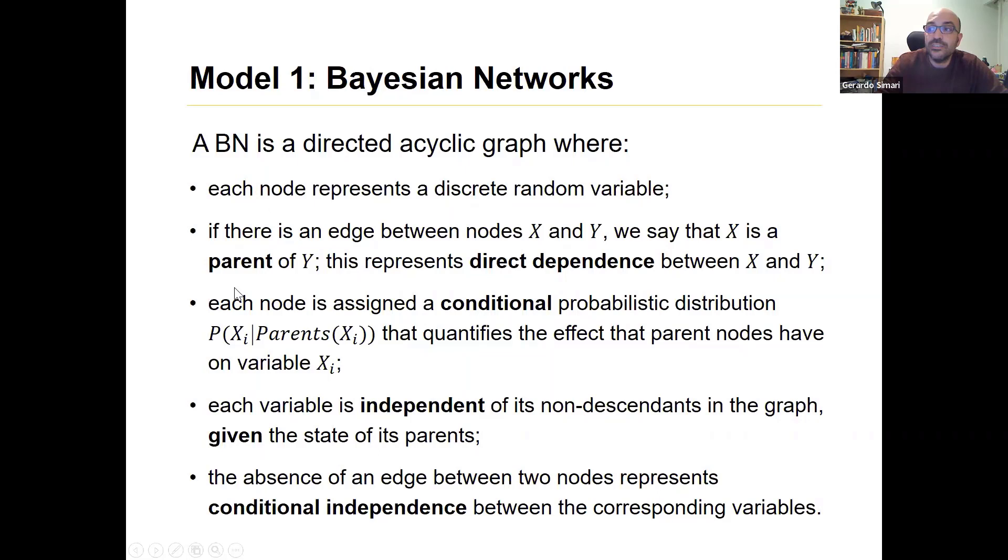And each node is assigned a conditional probabilistic distribution, or called a conditional probability table, that precisely encodes this dependence. So the probability that the variable takes on different possible values given all possible values for their parents, and that quantifies the effect.